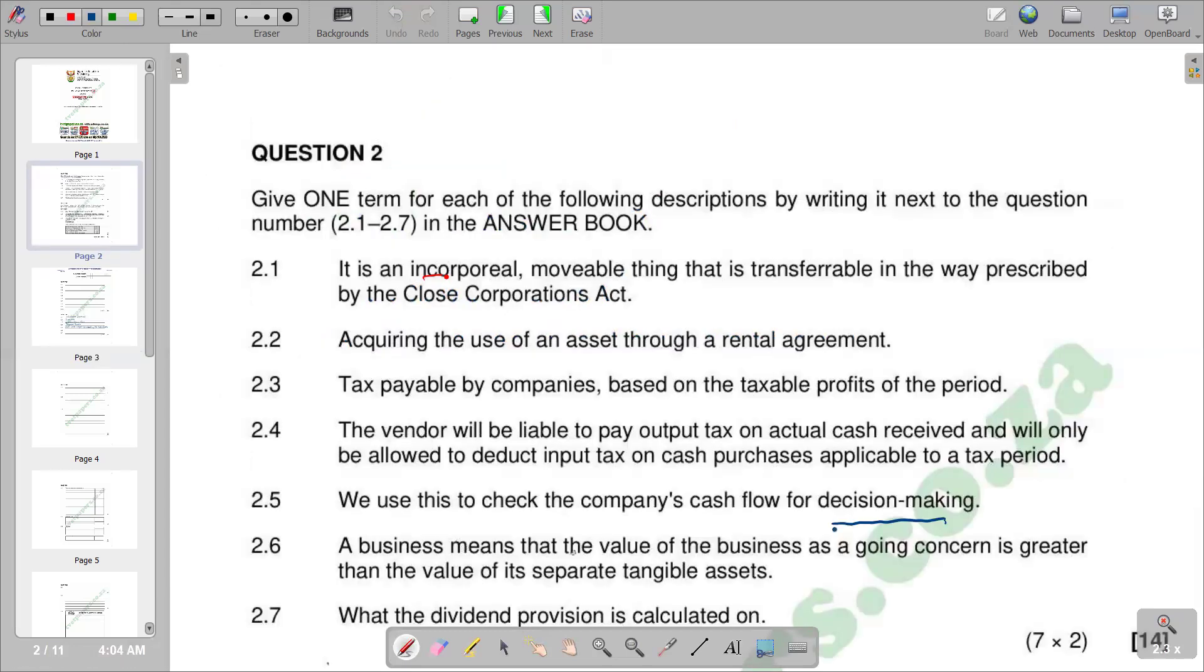2.6: A business means that the value of the business as a going concern is greater than the value of its separate tangible assets. The value of the business compared to the value of separate tangible assets. We make the valuation basing on a specific tangible asset, then we combine the total value and then compare to the value that is perceived to the business. When the value of the business that is perceived is greater than the value of separate tangible assets, that's when we have goodwill. The correct answer for 2.6 is goodwill.